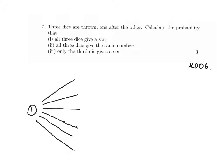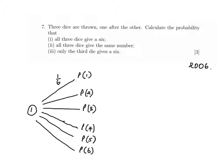Now, there are six numbers on the dice. We can either have the number one, two, three, four, five, or six. So the probability of getting a one is one out of six. We normally write the probabilities on the branches like so. The probability of getting a two is one out of six, and so on and so forth. This is the first set of branches on the probability tree diagram.